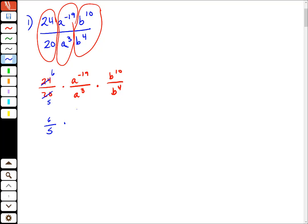a to the minus 19th over a to the 3rd, that is subtraction. So it's a to the minus 19 minus a positive 3 and eventually that will give me, I'm going to do one more line and finish that, a to the minus, negative 19 minus 3 is minus 22, right?